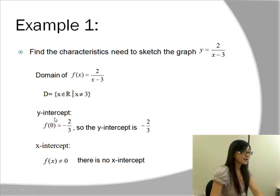For the y-intercept, what we do is we make x equal to zero, because at the y-axis, x equals zero, and we see what we get for f of zero. And we get negative 2 over 3, so the y-intercept is negative 2 over 3.